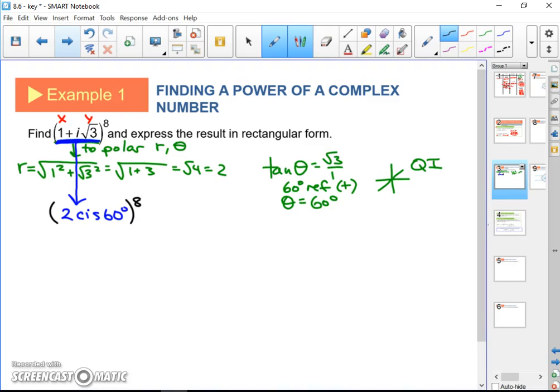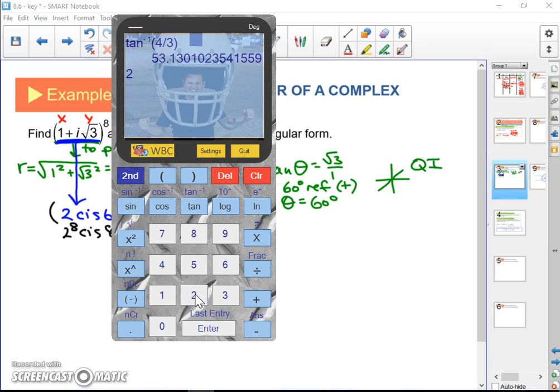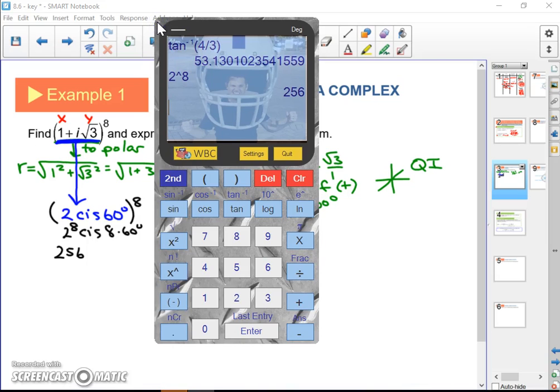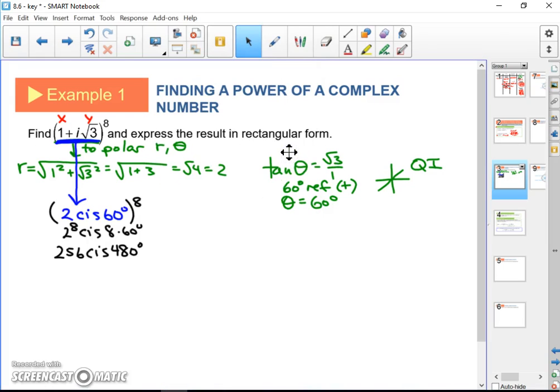De Moivre's says we're going to take 2 to the 8th power and we're going to take 8 times 60. 2 to the 8th power is 256, and 8 times 60 is 480. So 256 cis 480 is the answer.